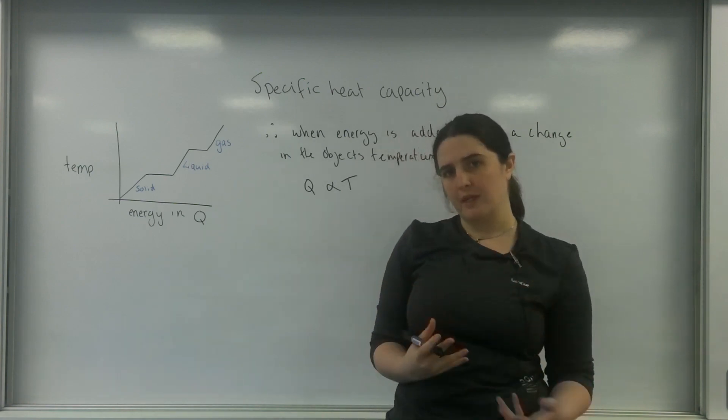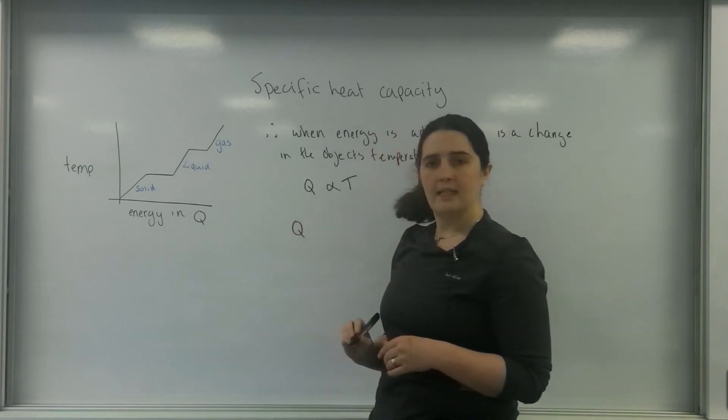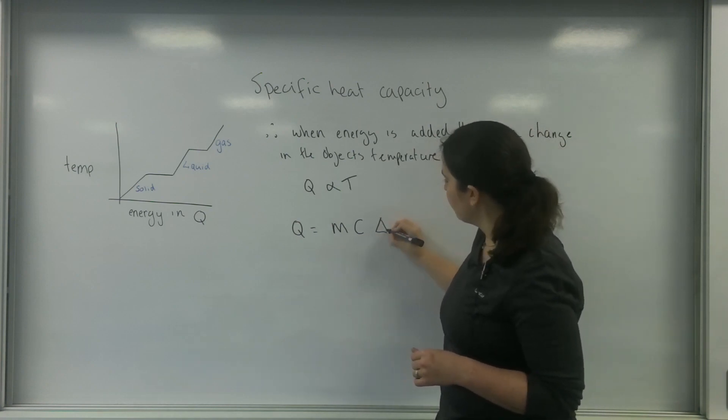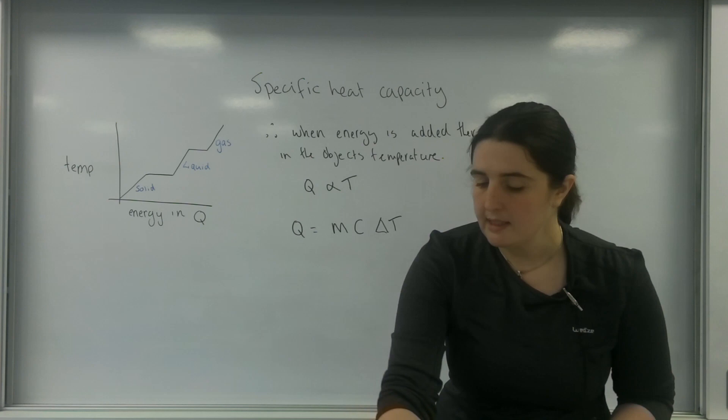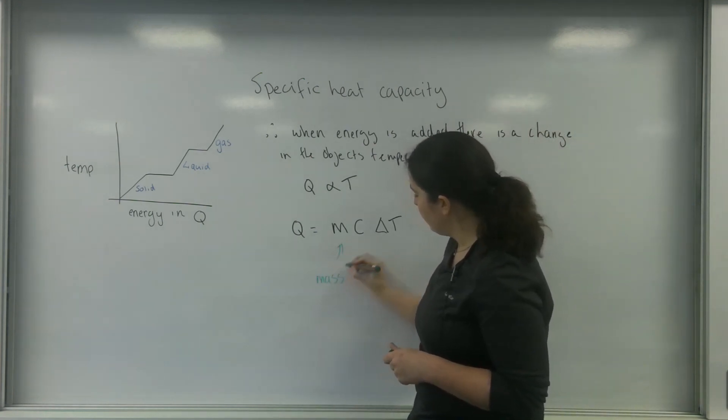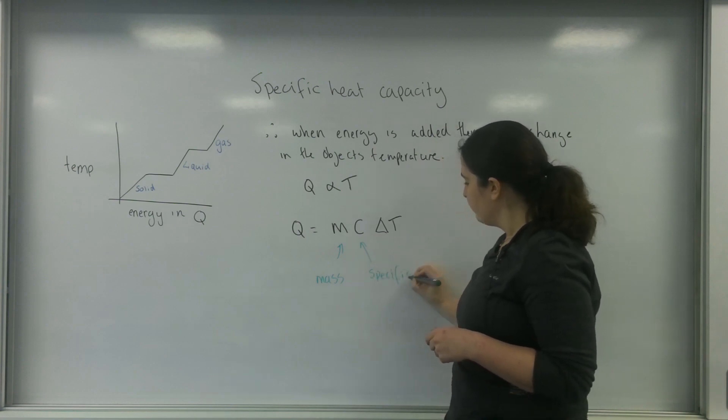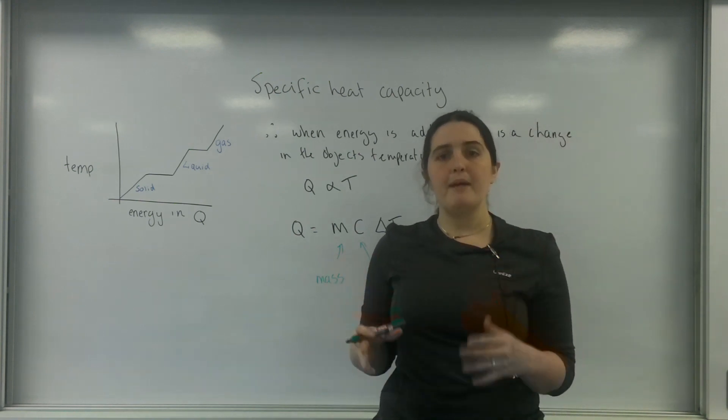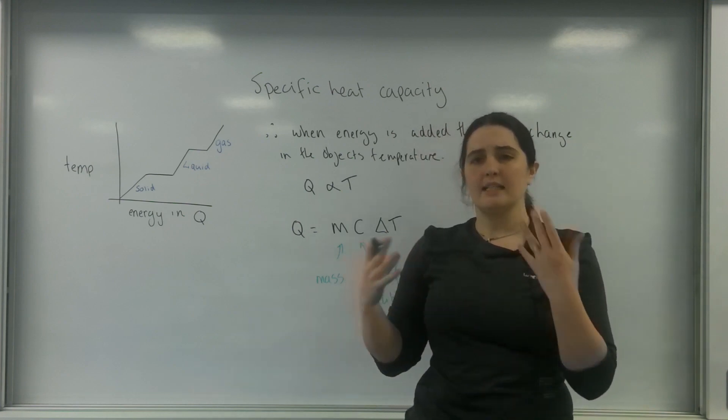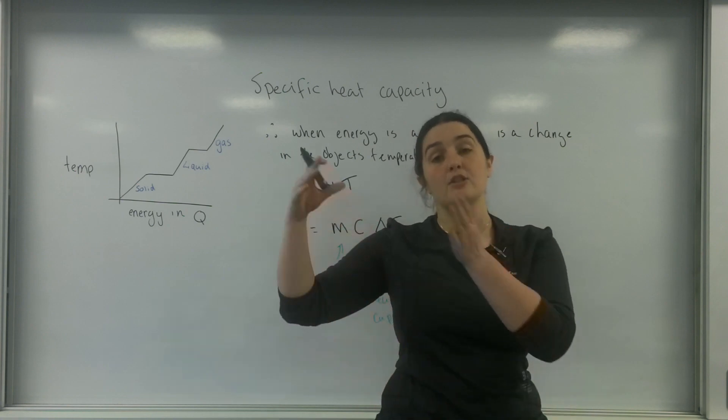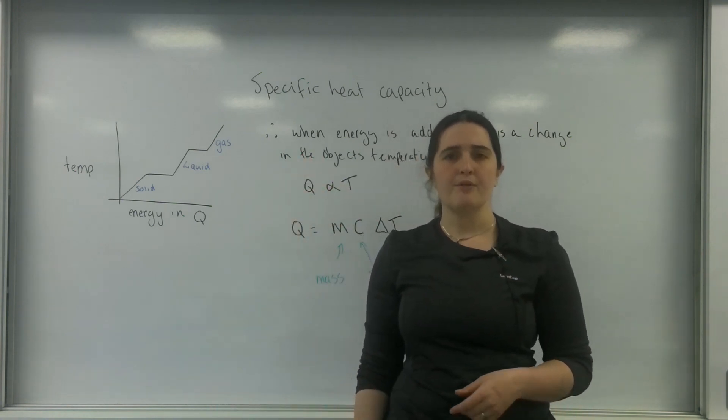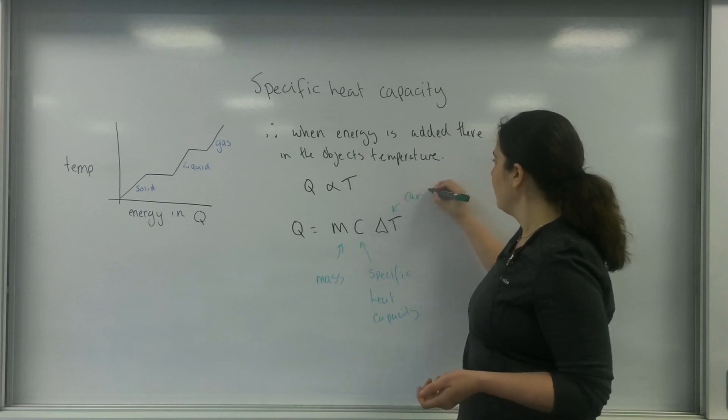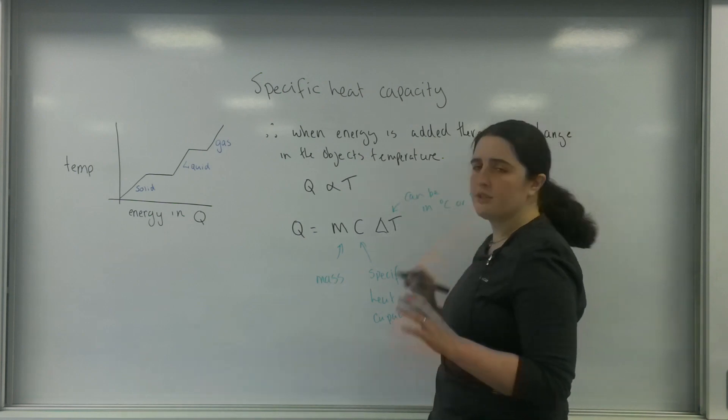The formula that we're going to use, which is called the specific heat capacity formula, is that the energy needed is the mass of the object times by C times by the change in temperature. This here is mass, this letter here is the specific heat capacity, and this is the change in temperature. This can be in Kelvins or degrees. It doesn't matter. Going from 1°C to 11°C is a change of 10. From 274 to 284 is also a change of 10. This can be in degrees C or Kelvin.